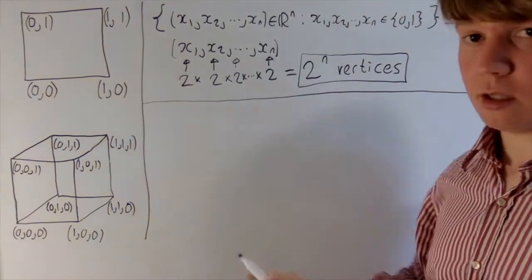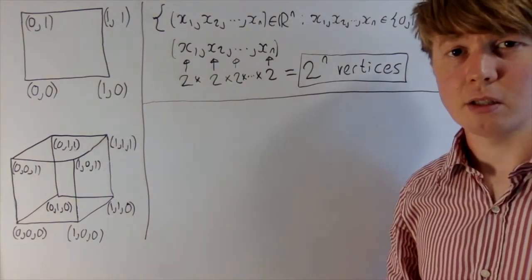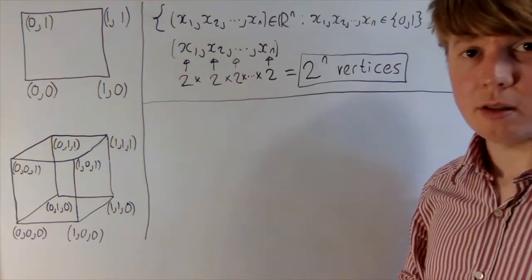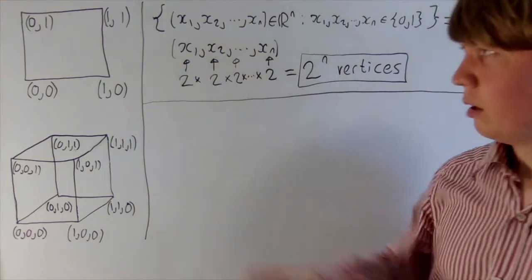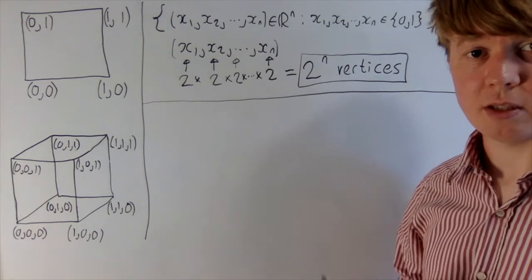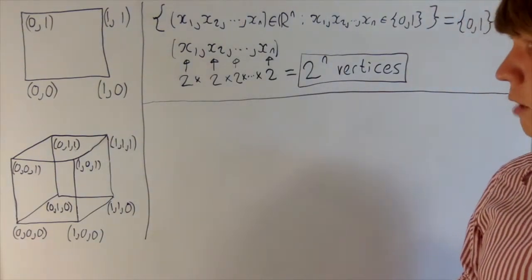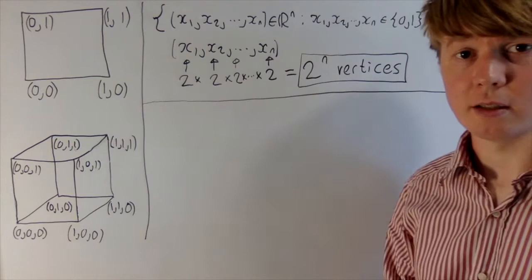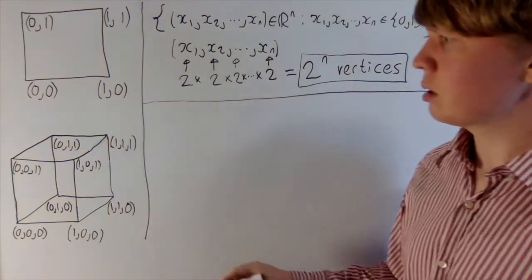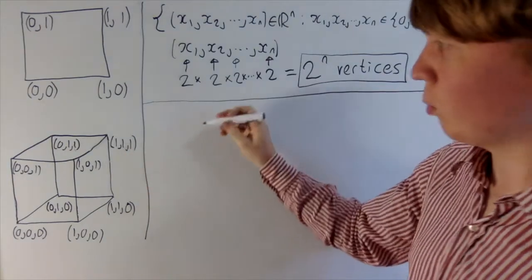The next, slightly harder problem is how many edges does an n-dimensional hypercube have? For the 2D and 3D cases you can just draw and count, but we need to be much more clever. We need to think about what an edge looks like in terms of coordinates — and that's not immediately obvious. Let's have a look at the vertices (1,0,1) and (1,1,1), which are connected by an edge.